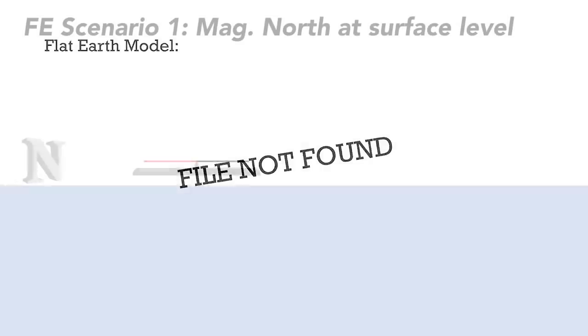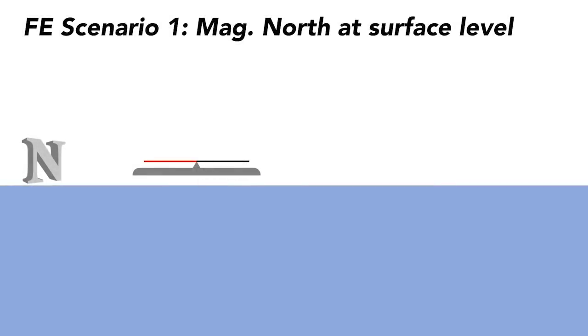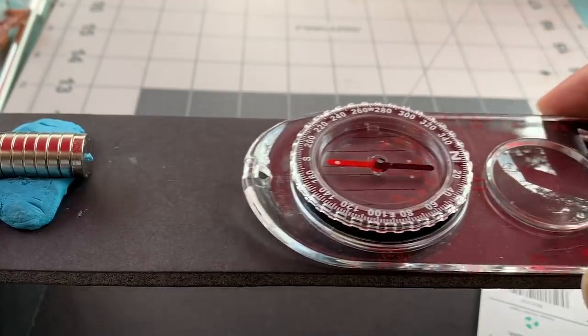First, let's consider magnetic north on a flat earth being just around the surface of the earth. How would the compass needle act? Well, the compass needle would point toward magnetic north, and as long as the compass was level and at the same altitude, the needle would stay level, as we can see in my diagram and in this simulated magnetic north.